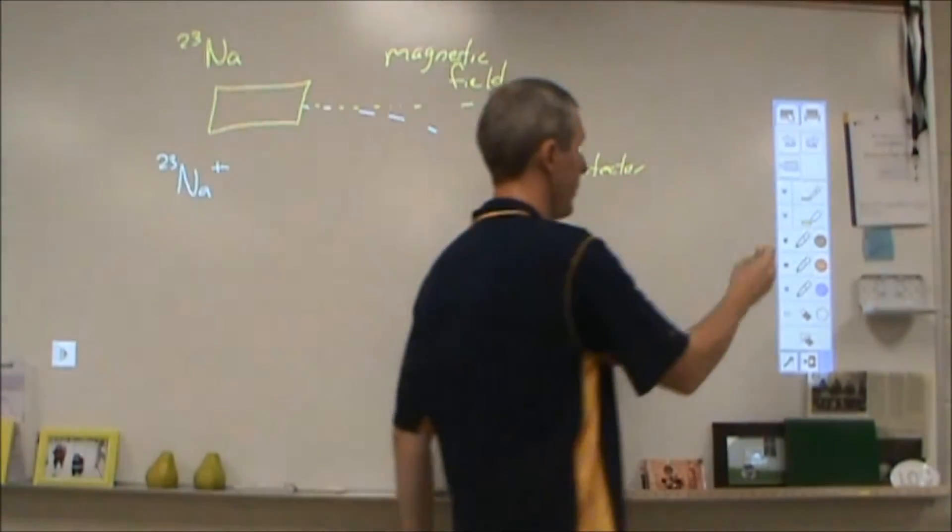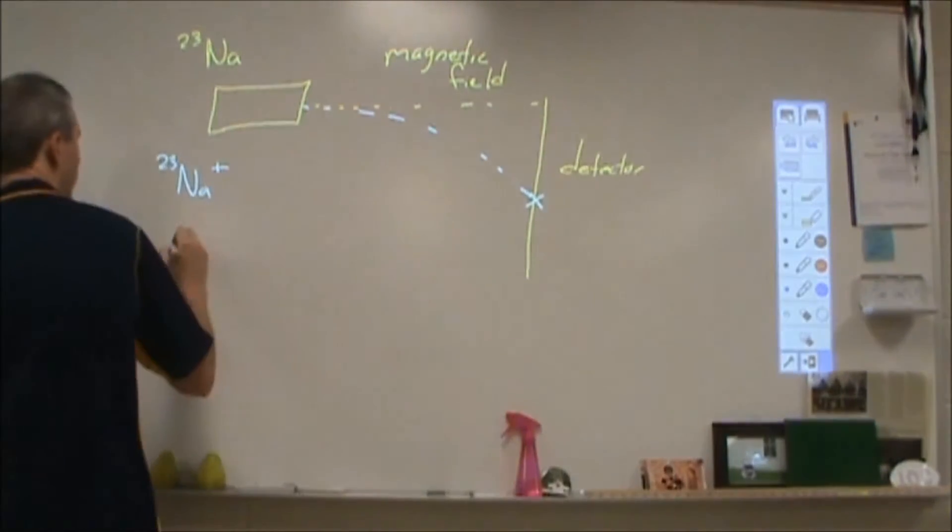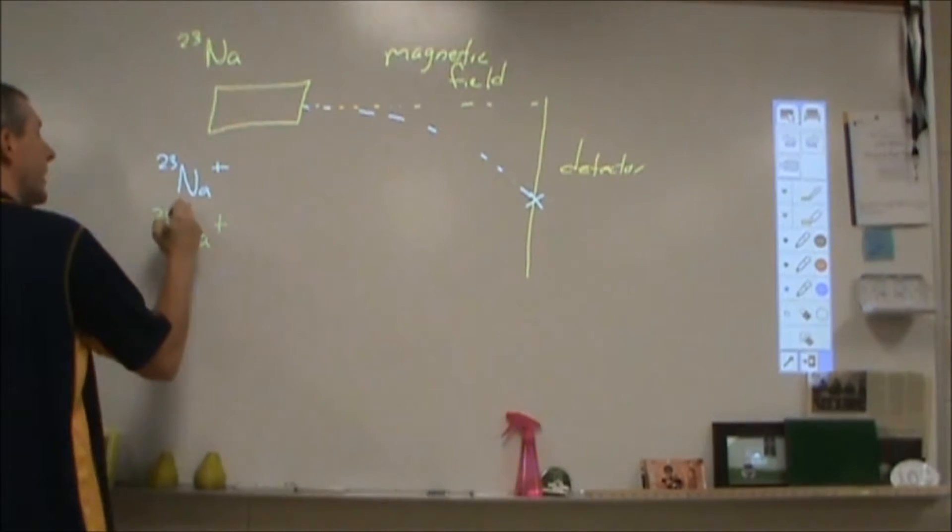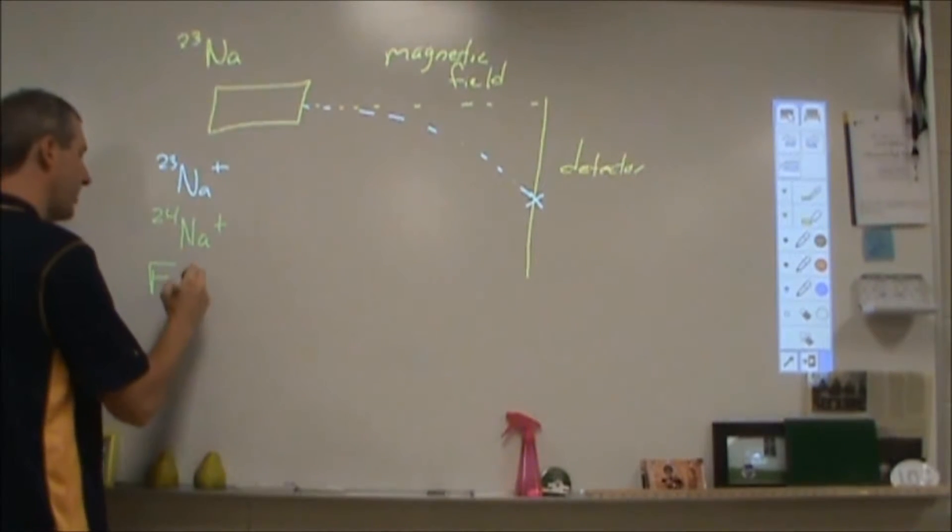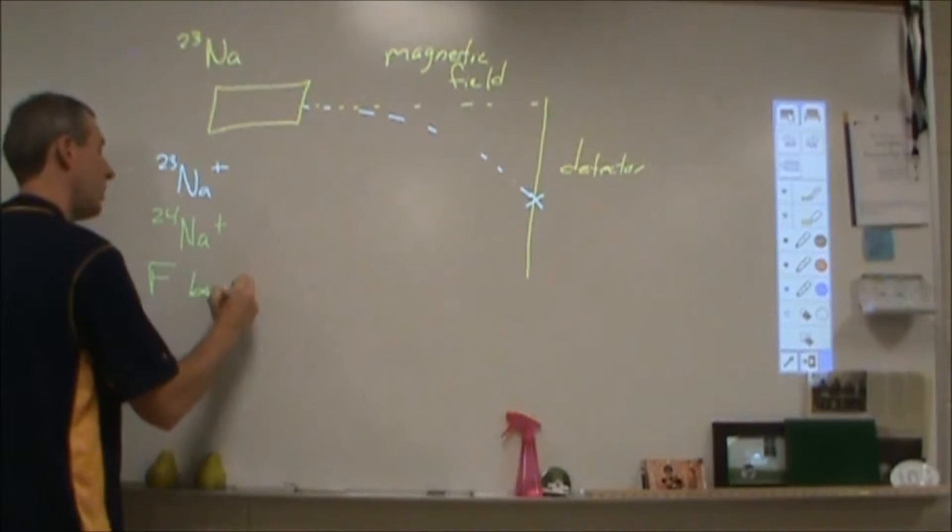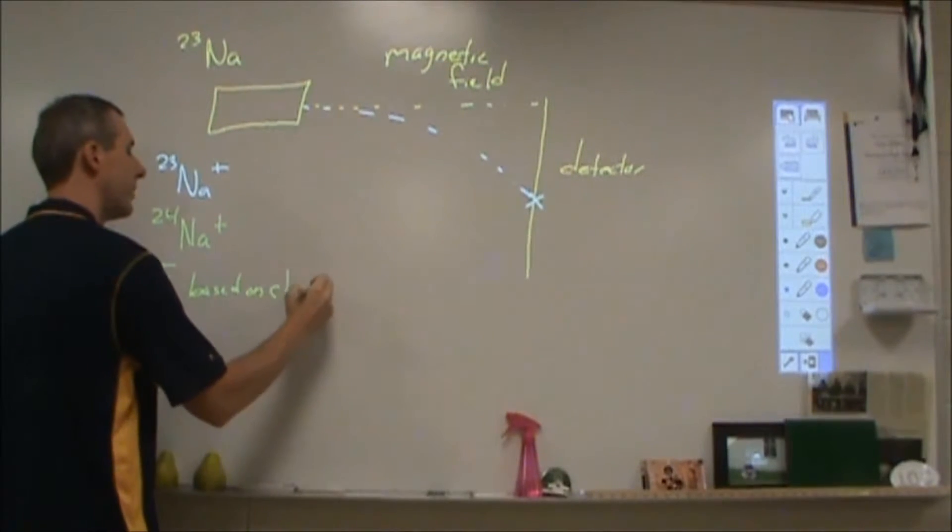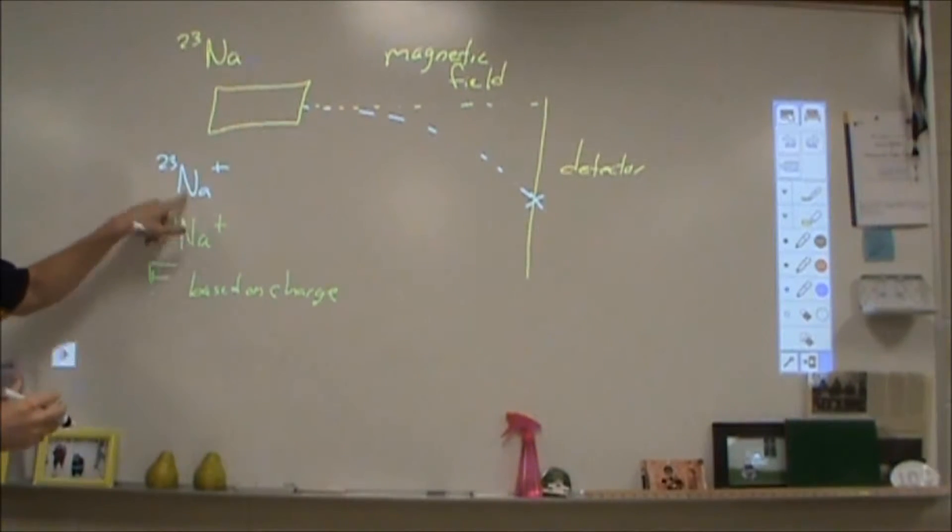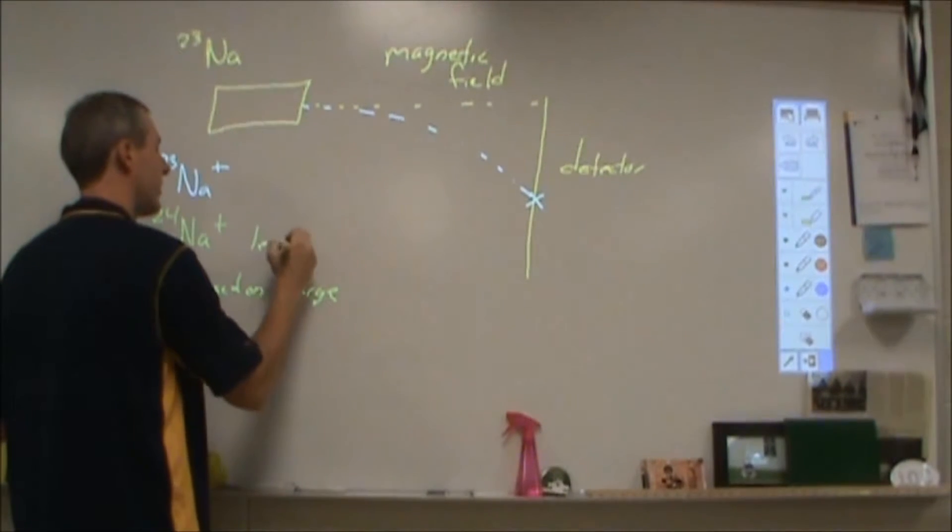Now the sodium 23 plus, having a positive charge, is going to interact with the magnetic field in a way that's going to cause it to deflect. So it's going to hit somewhere on that detector. So then the big question is, what happens with an isotope? The isotope is more massive. Now the force is based on charge. So the two ions here will experience the same force, but this one has more mass.